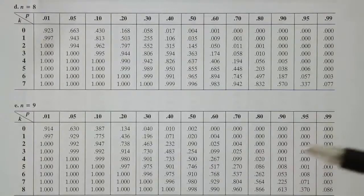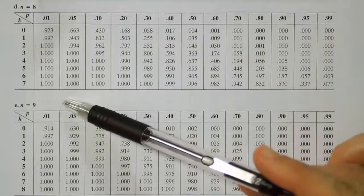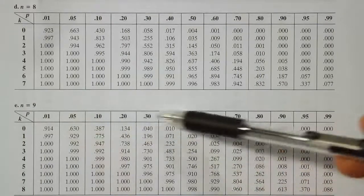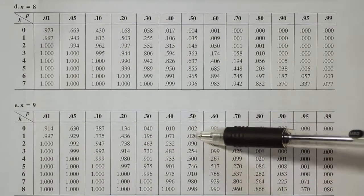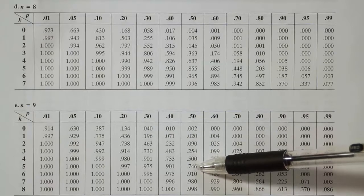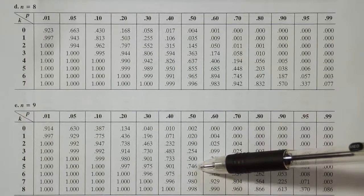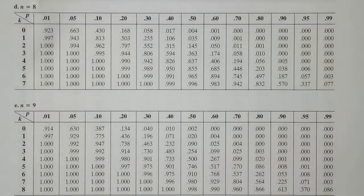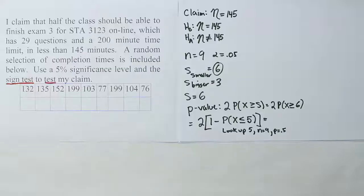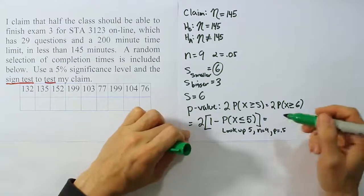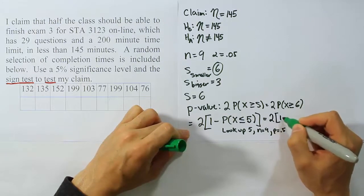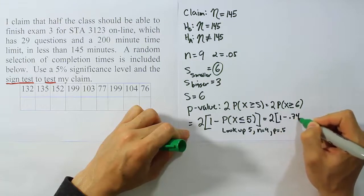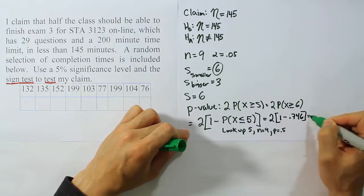Okay, so we're looking at the binomial table for n equals 9, and we're going down to the 0.5 column and down to the k equals 5 value. So we get 0.746. Okay, so the value we get from our table is 0.746.